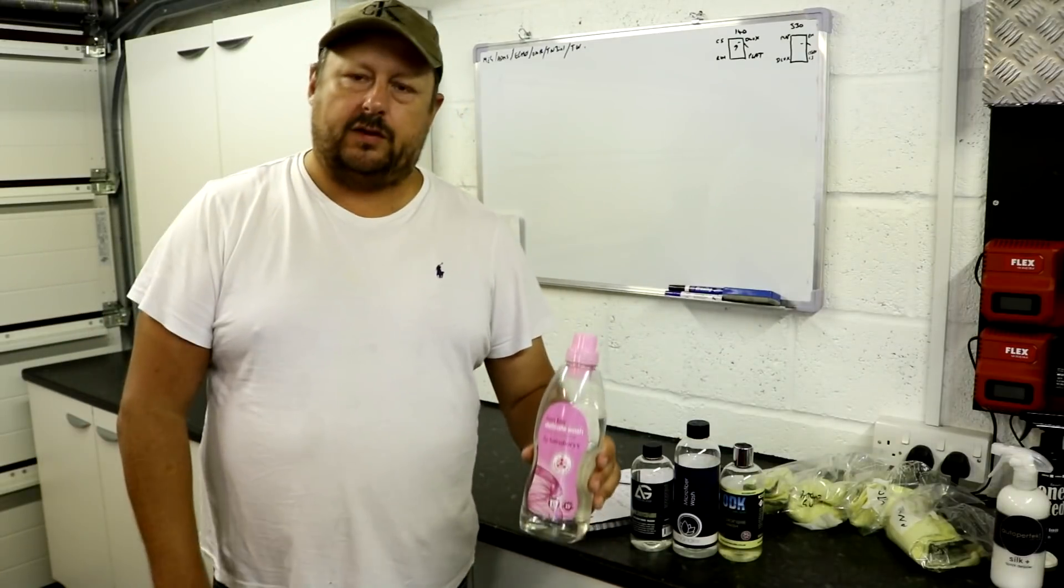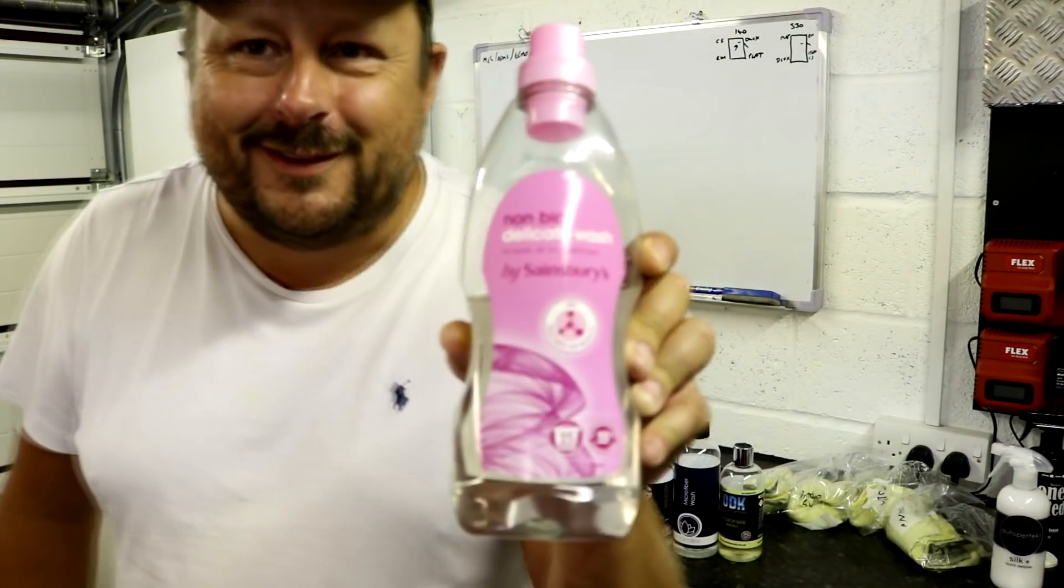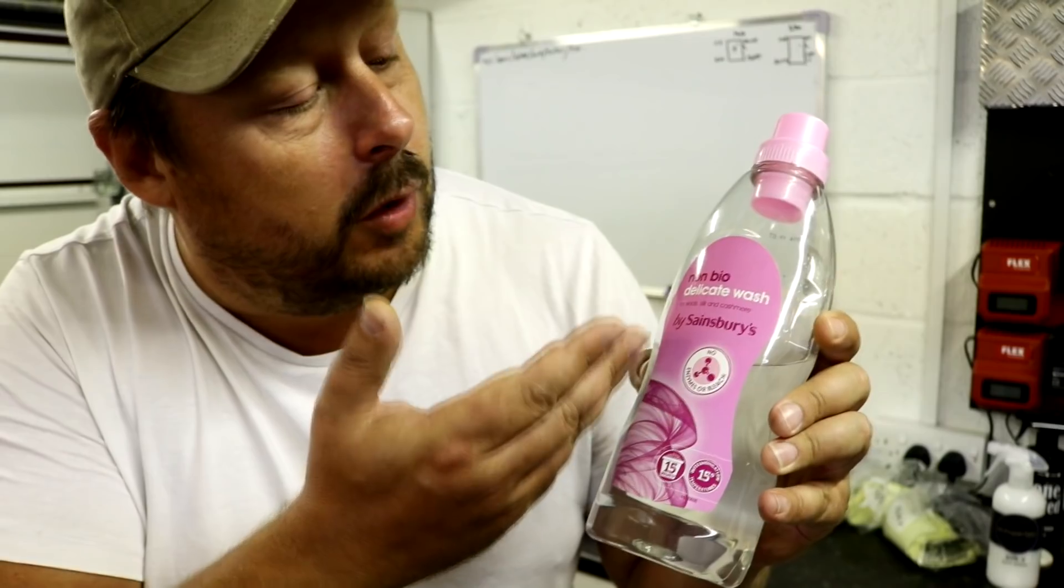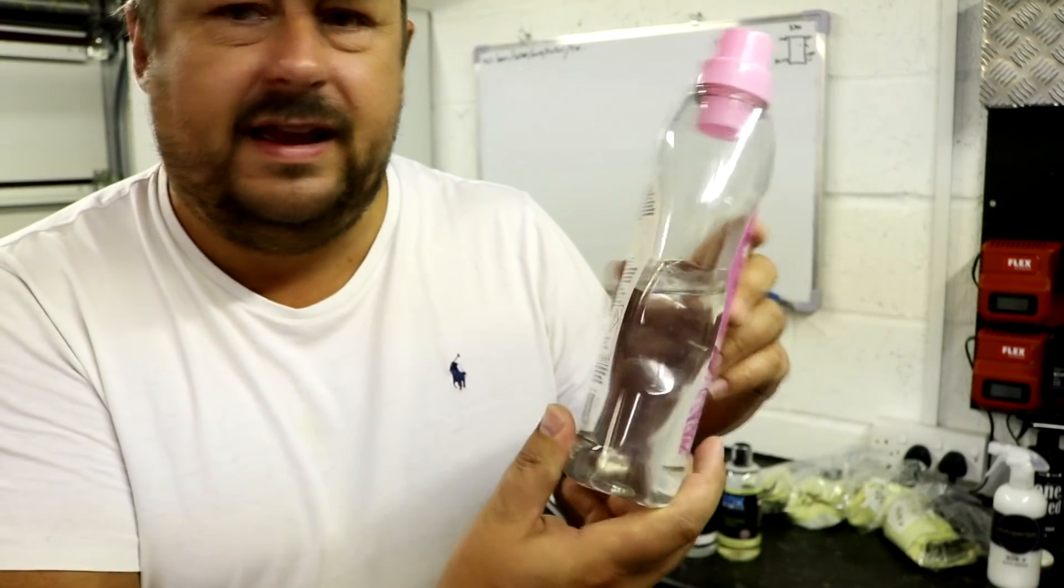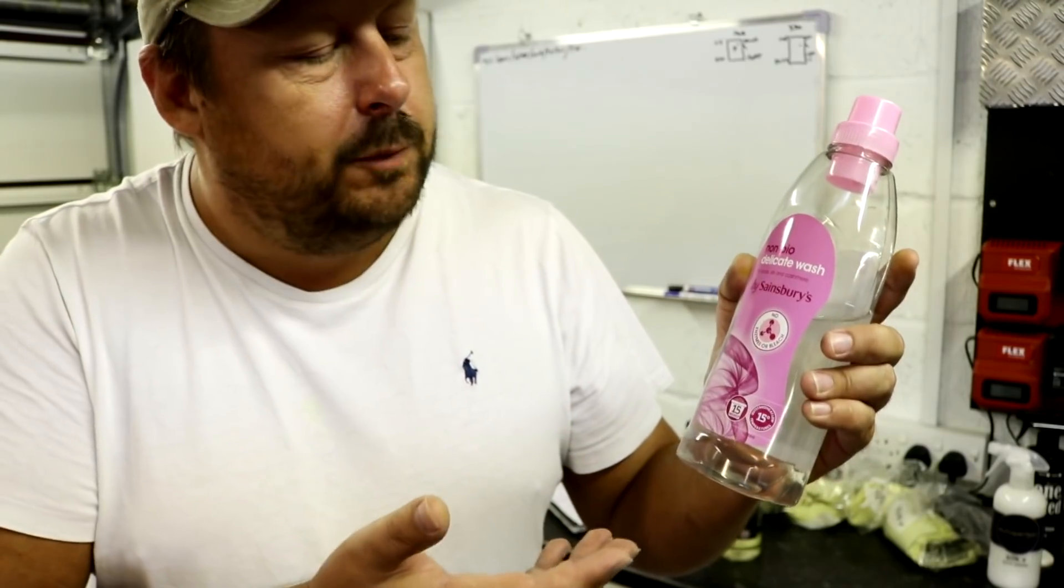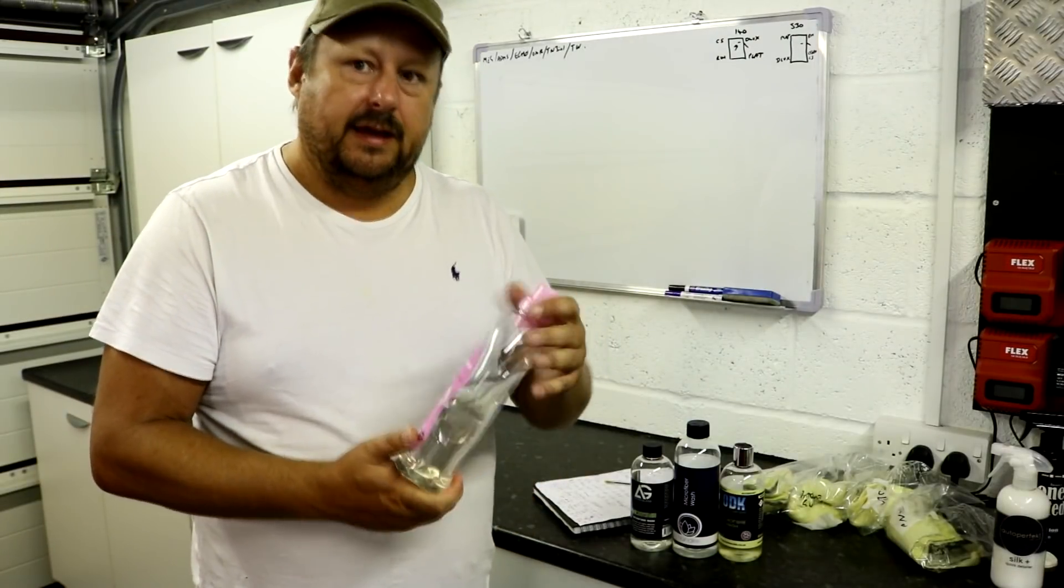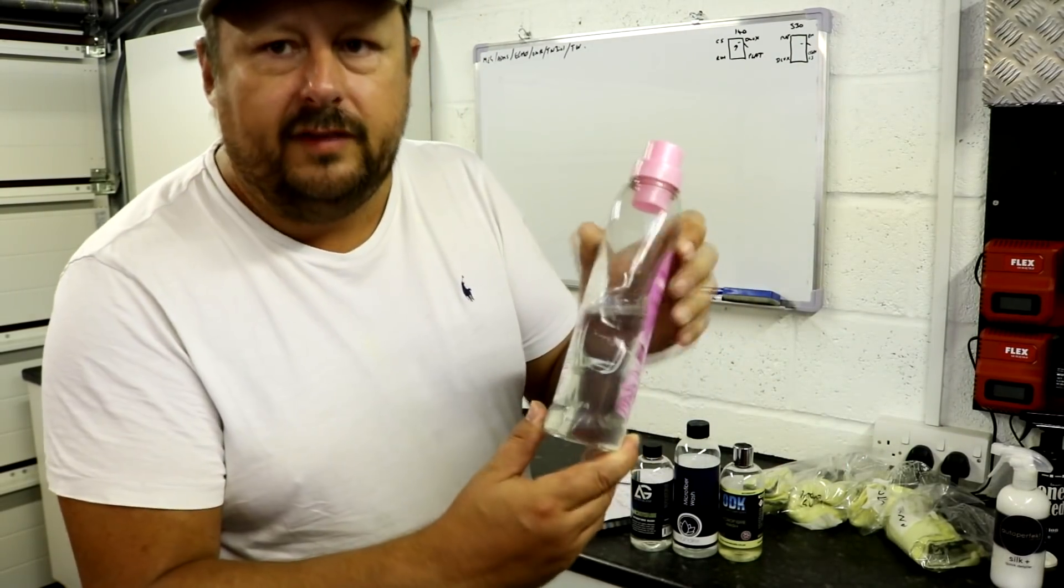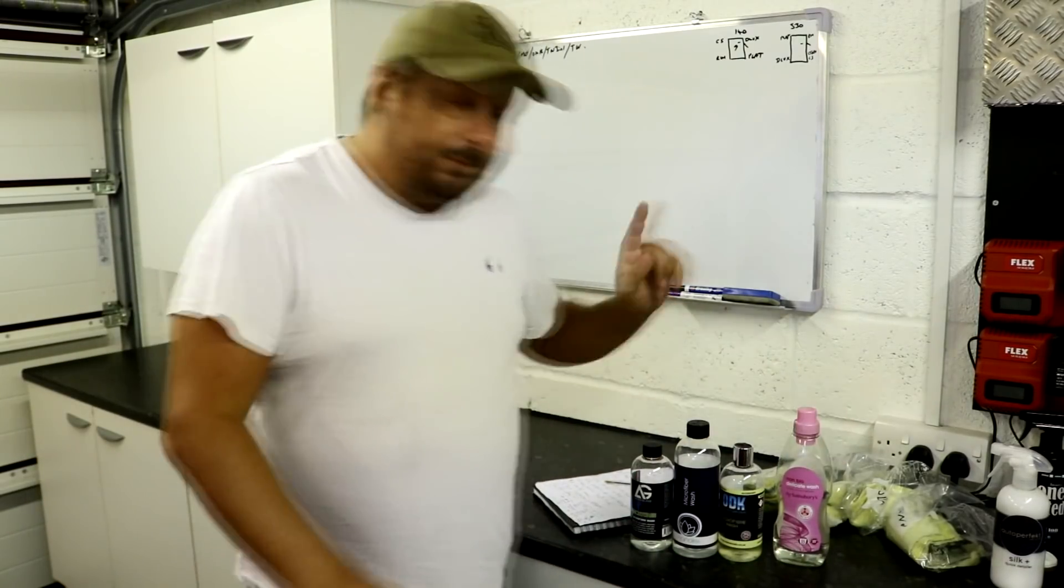Now first up in this comparison guys is the product that I've been using for God knows how many years to wash my microfiber. It is the Sainsbury's non-bio delicate wash for wools, silk, and cashmere. It's a delicate wash, it's clear in color, it costs around about £2.50, the prices do vary, with a rough cost per wash of around £0.15. So it's relatively cheap guys. It contains no dyes but it does contain a fragrance, you can smell it sort of like old ladies Avon perfume.